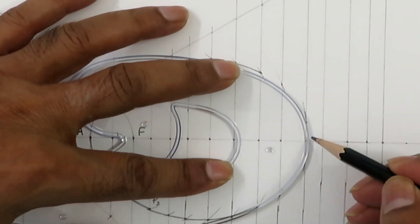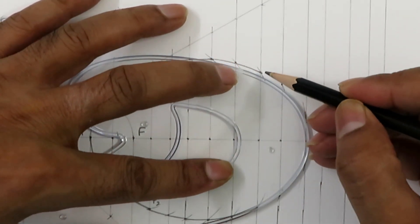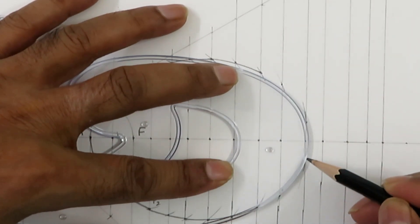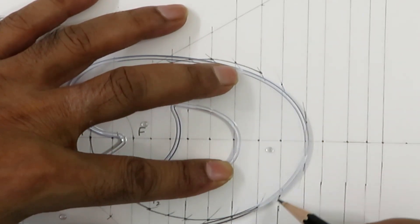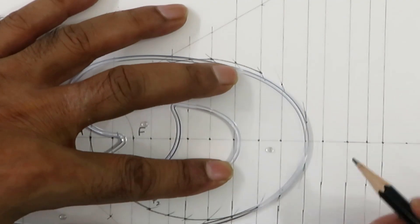Now this is another end of this ellipse, the major axis. We will try to make a smooth curve going from this half to this half.